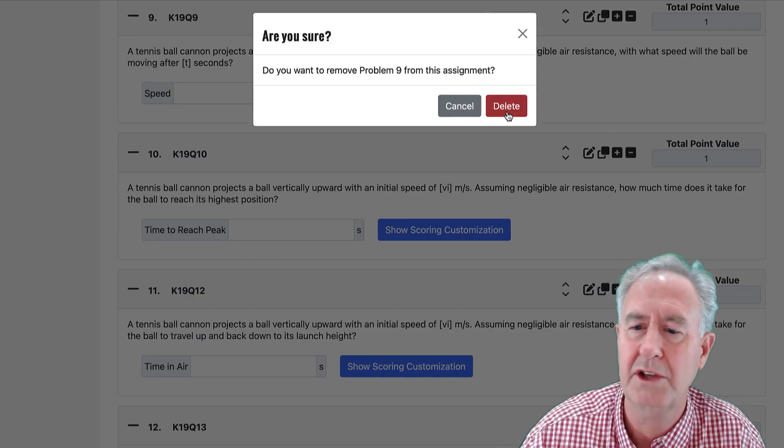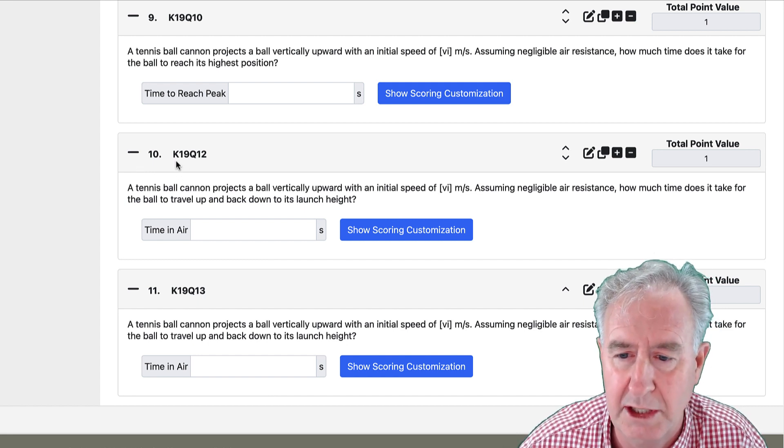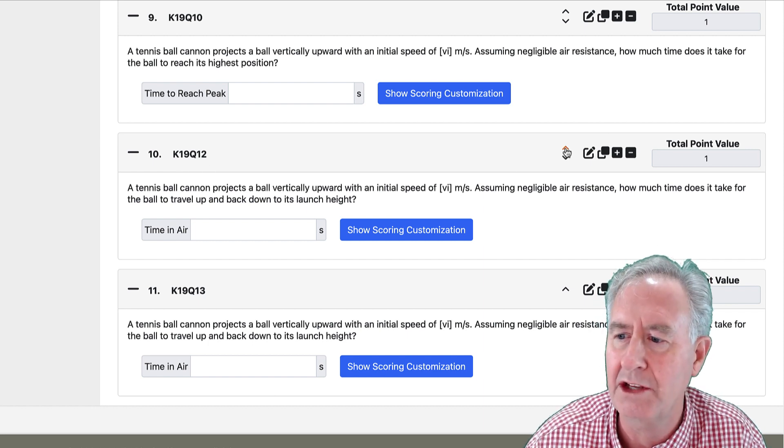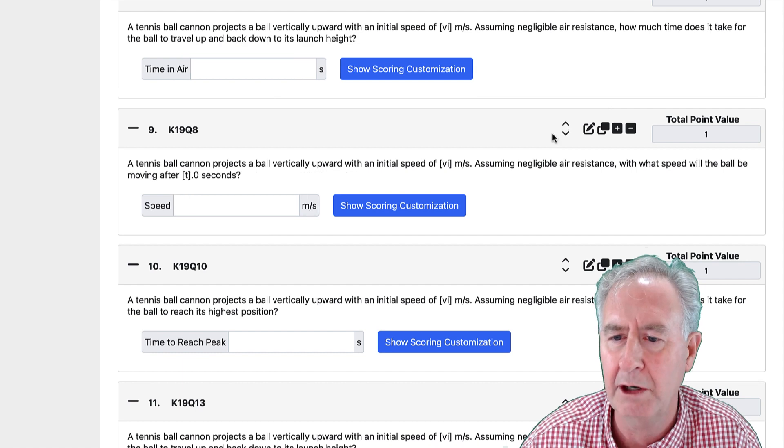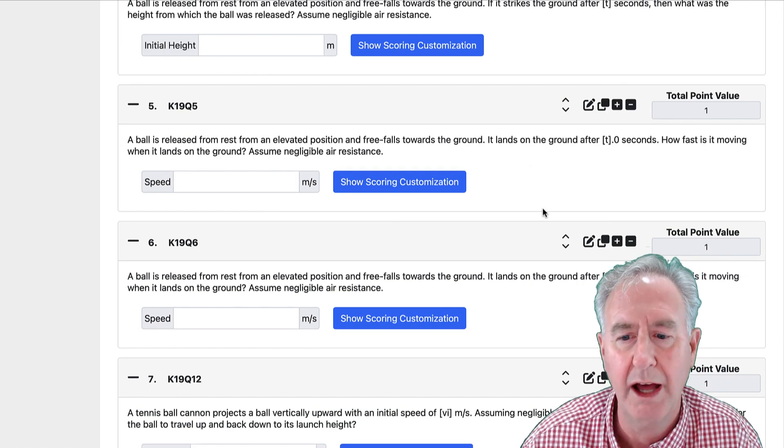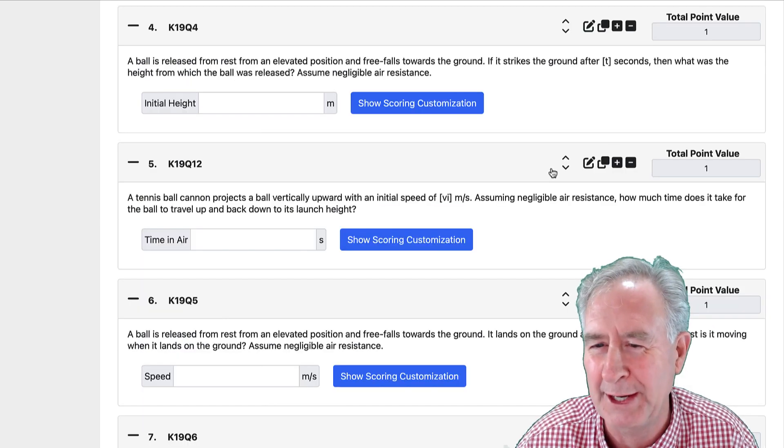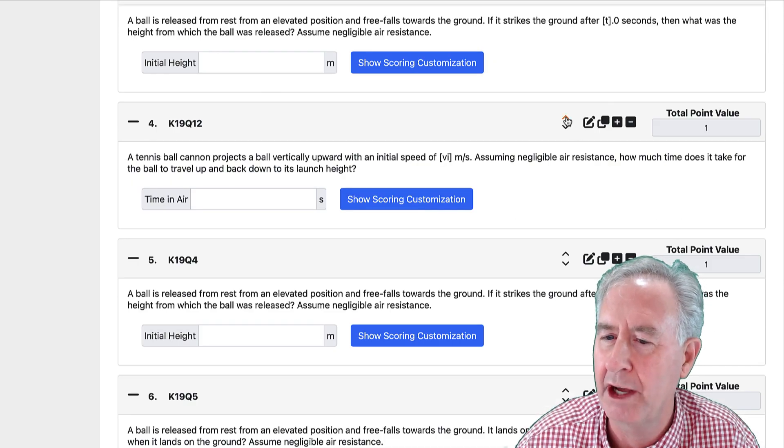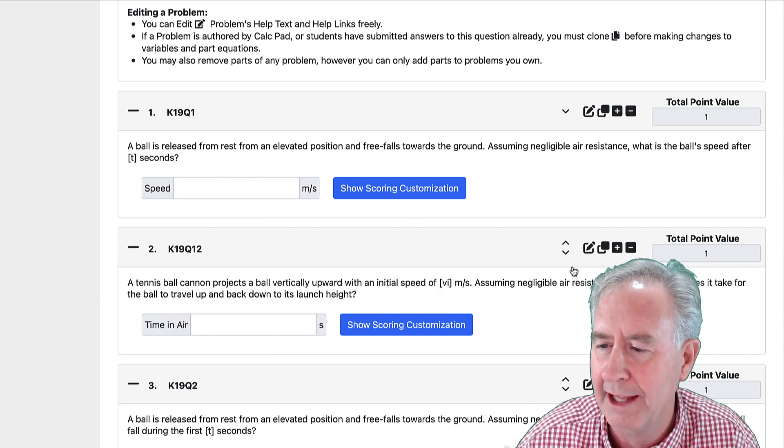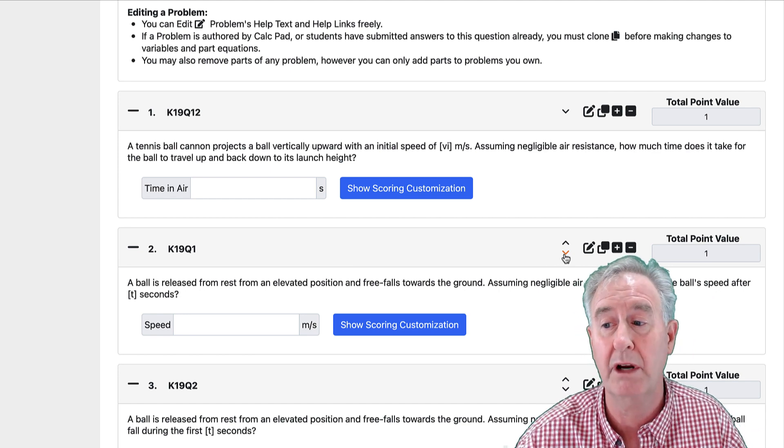One thing I noticed when I studied this set is this problem number 10 down here at the bottom. It's actually called K19Q12. I want it to be first, so I'm going to click these up arrows. And as I click the up arrows, I begin to move K19Q12 upwards. I want it to be the first problem showing. Just what I wanted. So I'm clicking it up. Every time I move it up, it moves one problem forward. So I have to scroll up one problem forward, and now I have it as the first problem. So the up and down arrows allow you to move problems around.